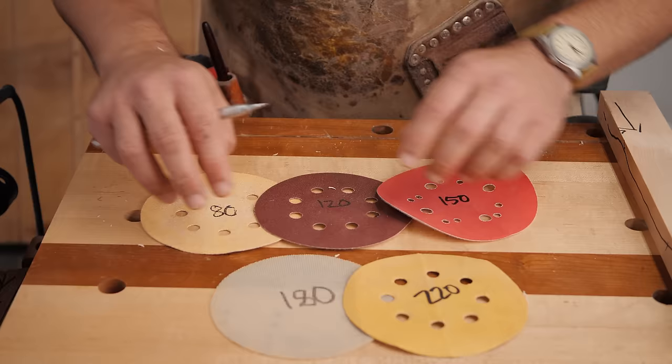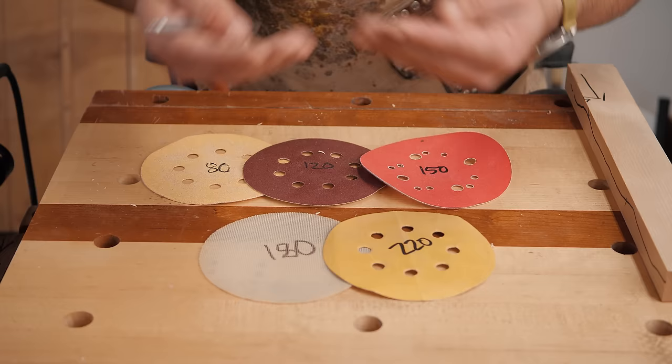And a lot of times if I'm using finishes that re-wet themselves, like lacquer, the lacquer in the new coat bonds and re-wets the coat below it, I won't even use 220.